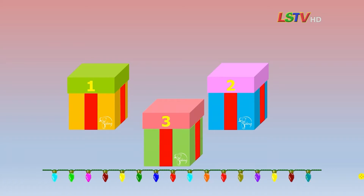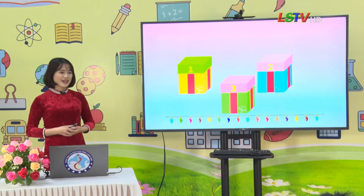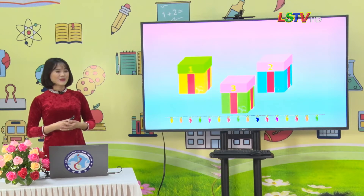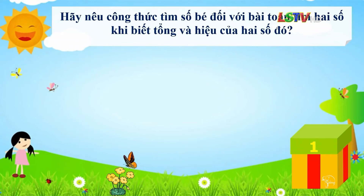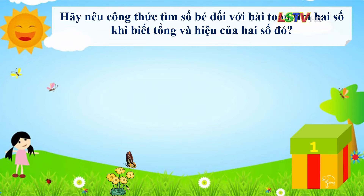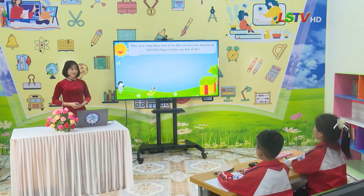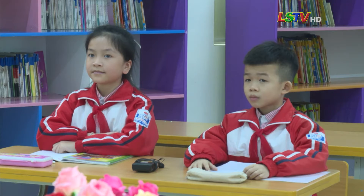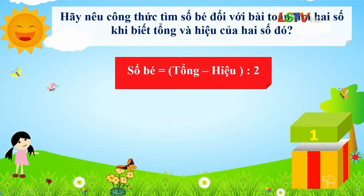Bên trong mỗi hộp quà là một câu hỏi. Các em suy nghĩ và trả lời đúng các câu hỏi để mở được các hộp quà. Các em đã sẵn sàng chưa? Chúng ta đến với câu hỏi số 1: Hãy nêu công thức tìm số bé đối với bài toán tìm 2 số khi biết tổng và hiệu của 2 số đó. Câu trả lời của em hoàn toàn chính xác. Em đã xuất sắc mở được hộp quà đầu tiên.